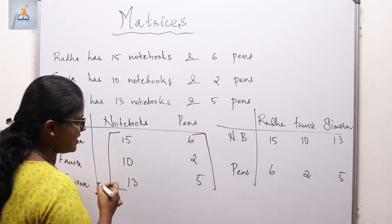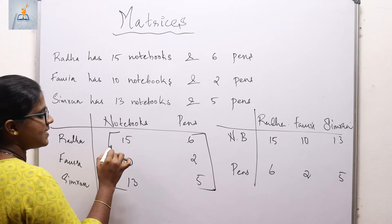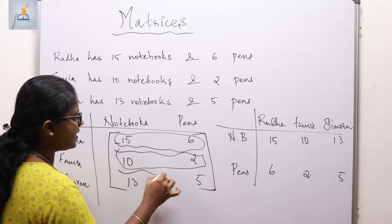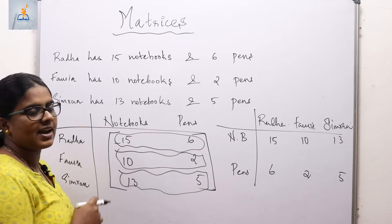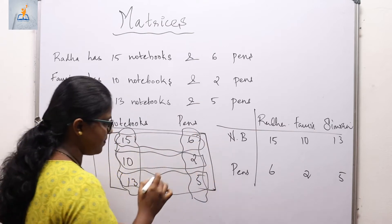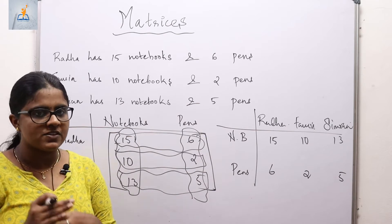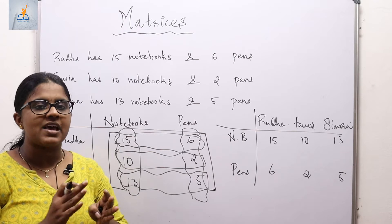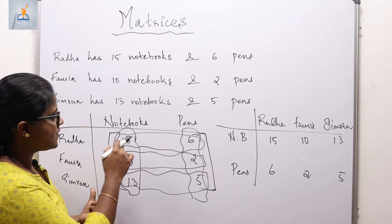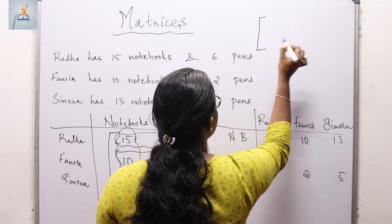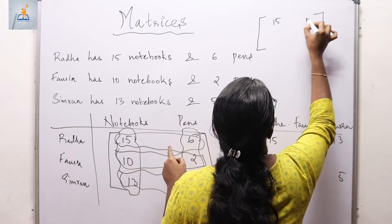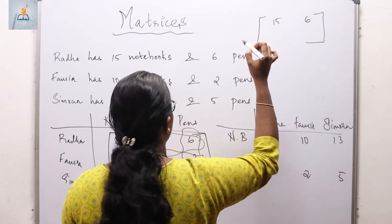This rectangular box contains three rows — the first row, second row, and third row — and two columns: the first column and the second column. A representation of a situation in a rectangular array of columns and rows is called a matrix. This particular arrangement is an example of a matrix. We always represent matrices in square brackets.